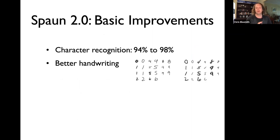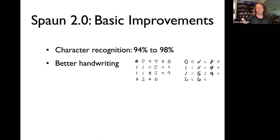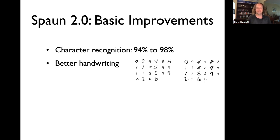Comparing SPAWN 1.0 to 2.0, there have been several basic improvements. Characters it recognizes are now at near-human performance levels of about 98% on MNIST, which has been reported as how well people do. The handwriting is also better. On the left is SPAWN 1's handwriting, on the right is SPAWN 2. The first column shows digits, the second column shows the model reproducing those digits — on the right-hand side, those second columns look much more natural, smoother and less squiggly.